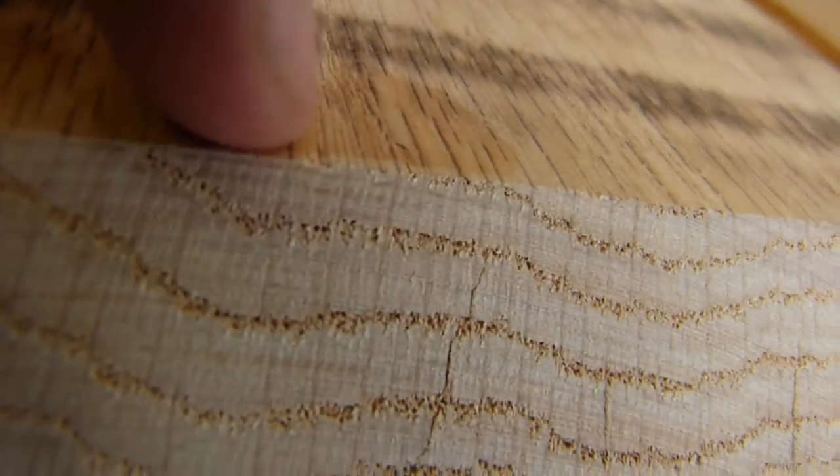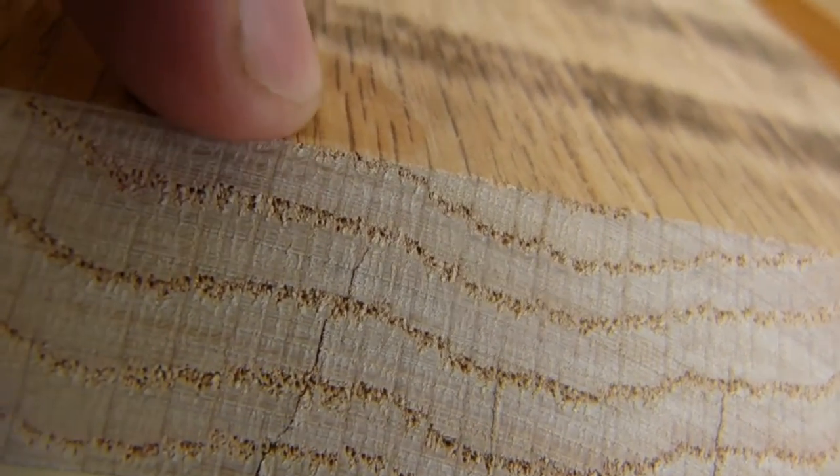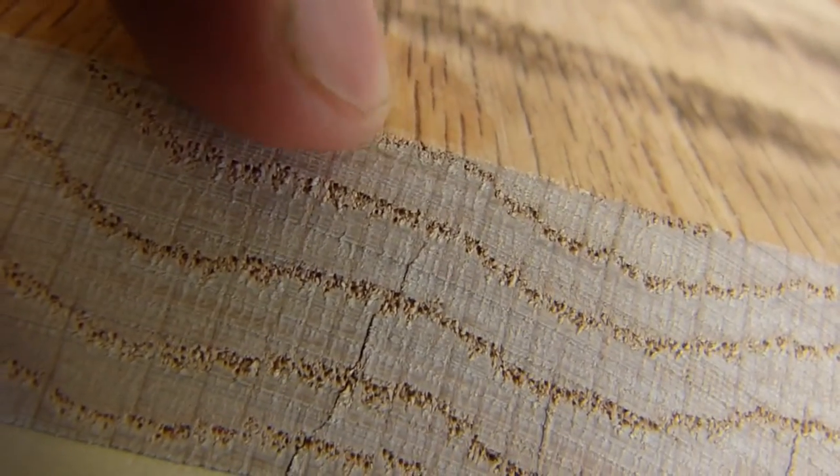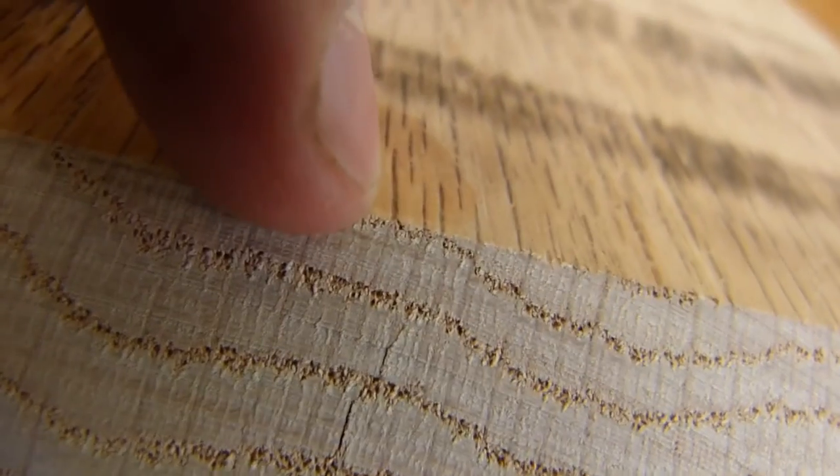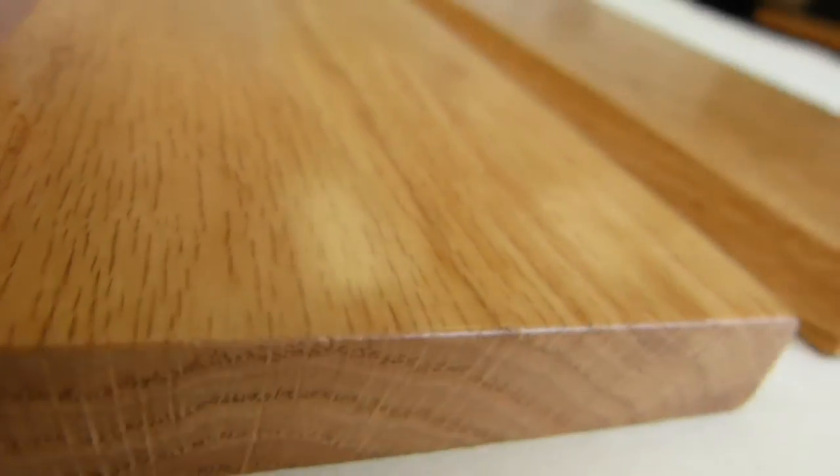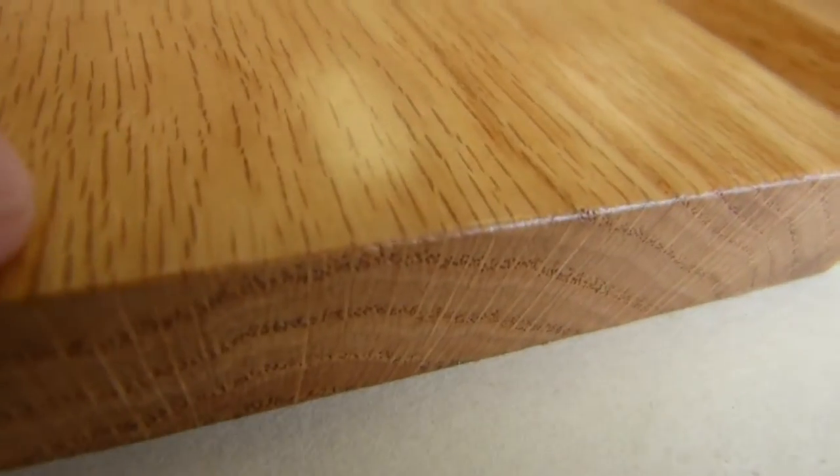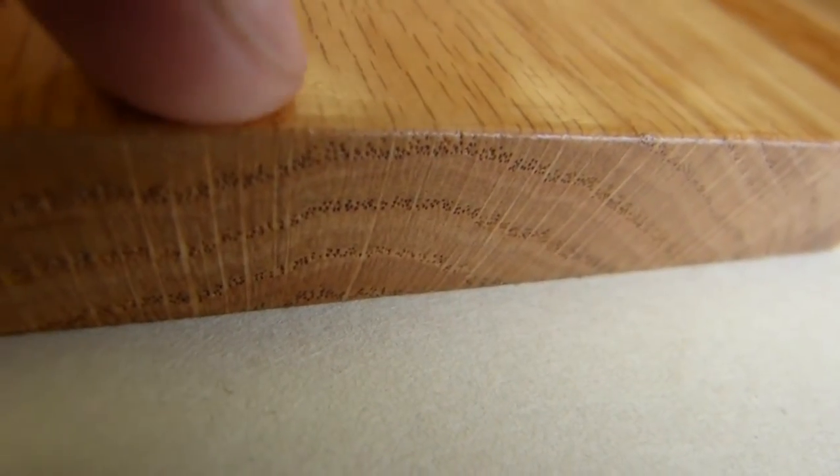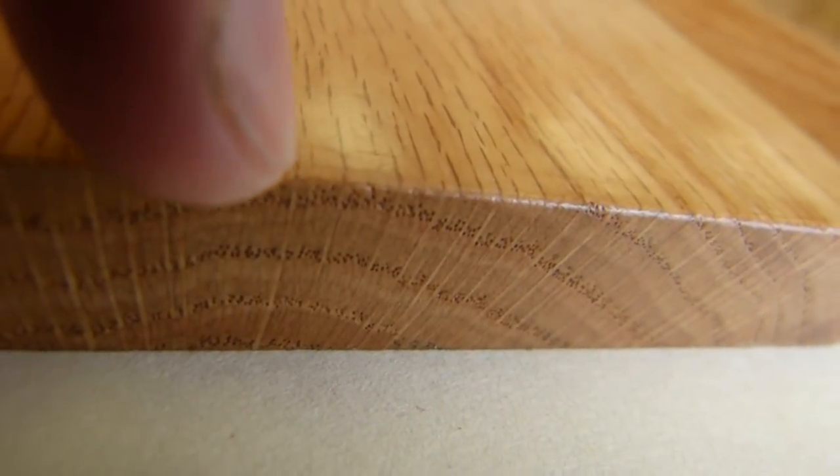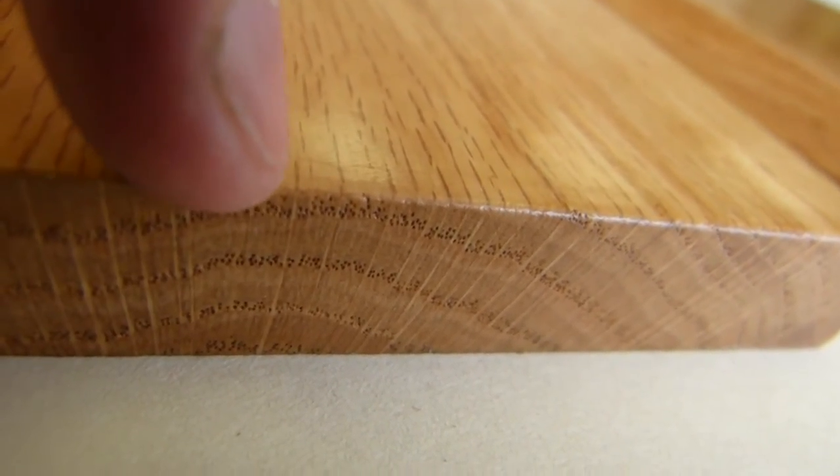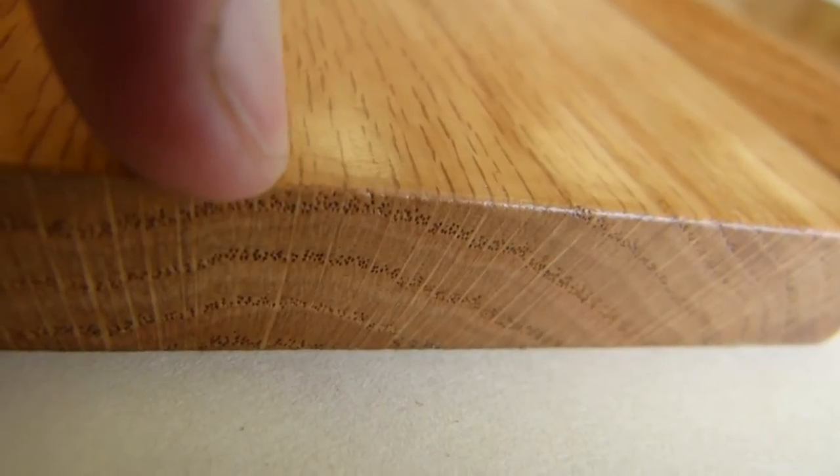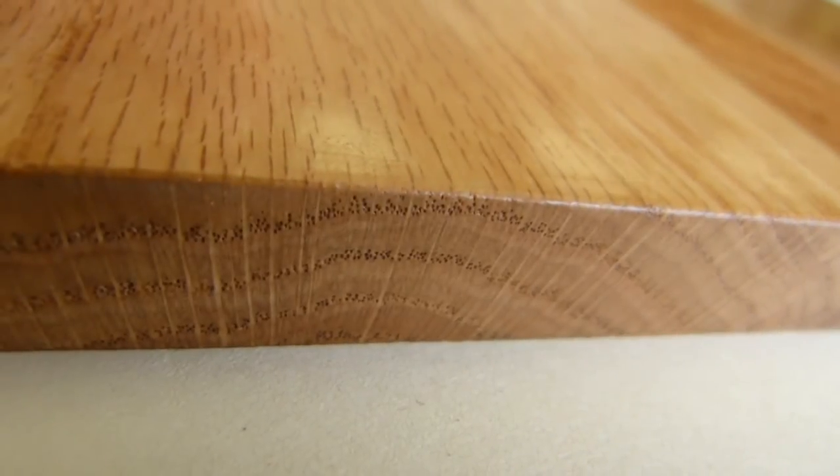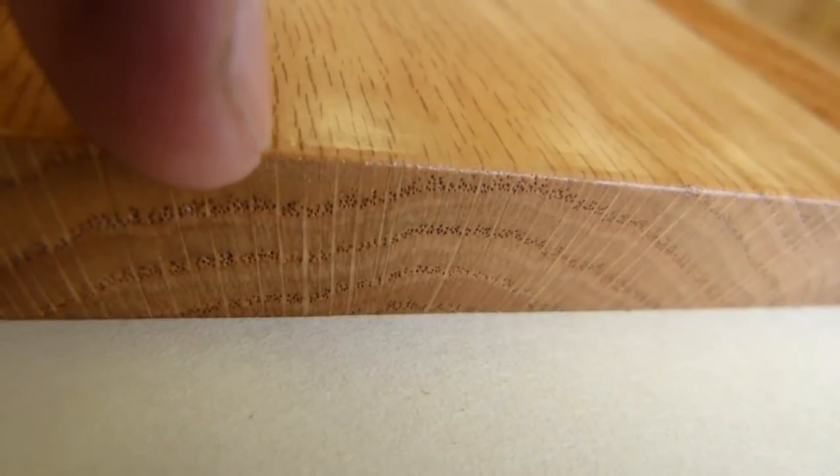You can follow the rays to the edge, and the rays continue on the edge there. That one there. Also on the same on the other side. Let's see, let's pick one. Yeah, how about this one? There, I know my finger is thick, but there's that one, and it continues as a white line on the end grain, and it becomes a ray fleck on the surface there.